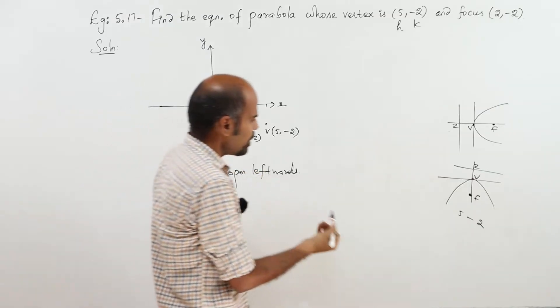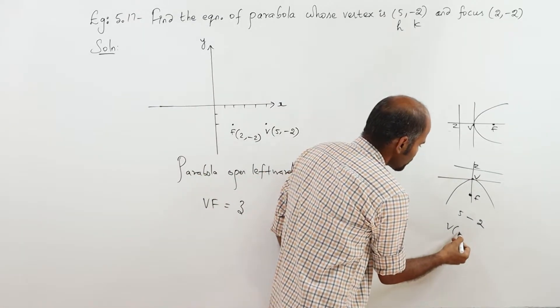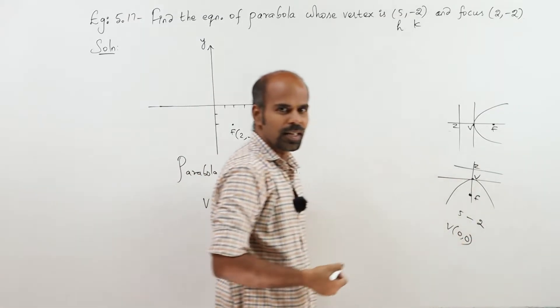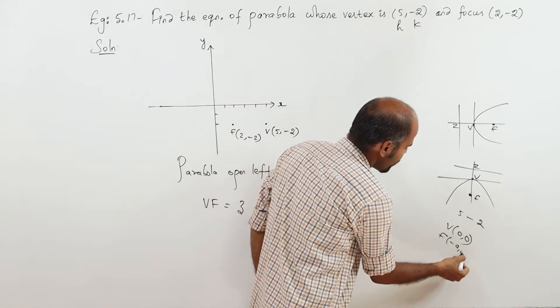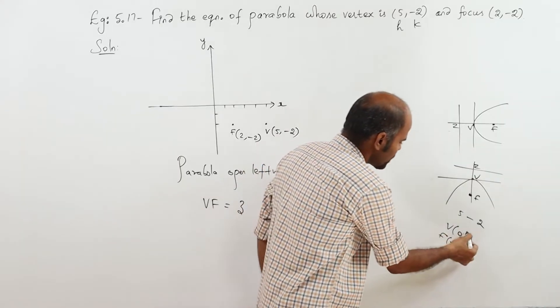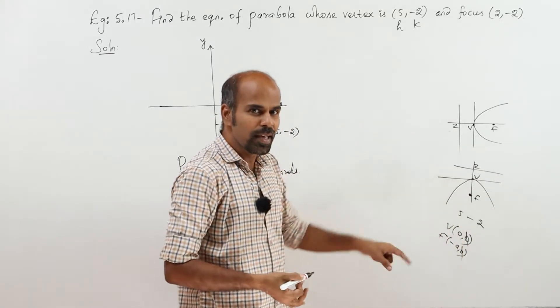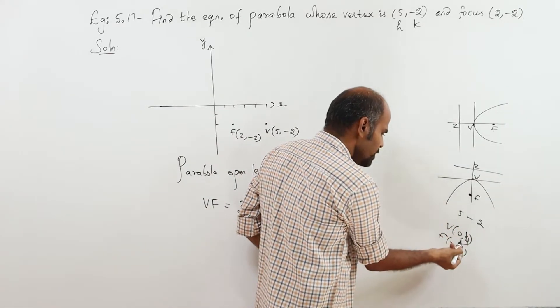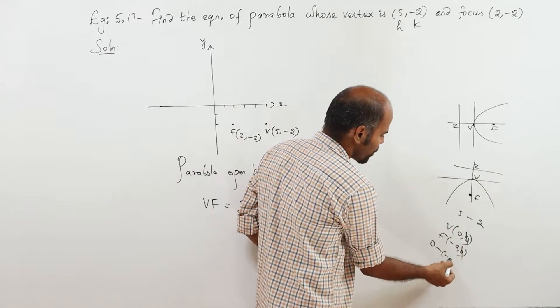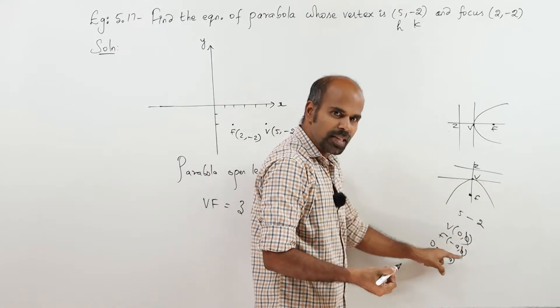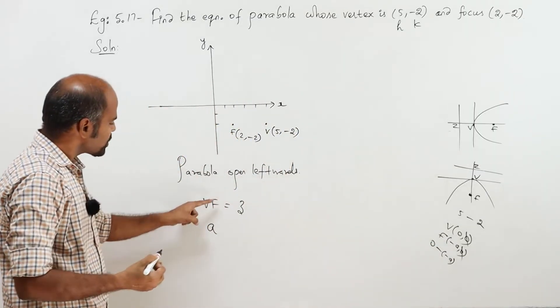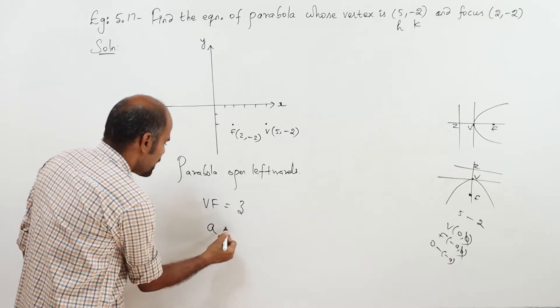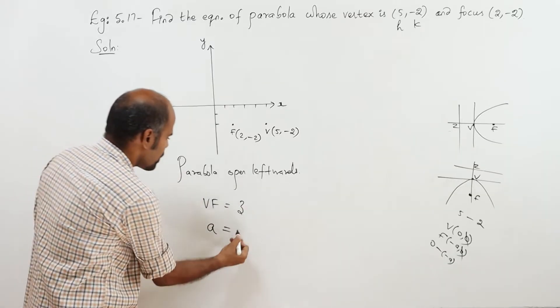Open left words yeddukla. Vertex yeddu 0, 0. Focus yeddu open left words, minus a, 0. Distance, y kawanehutra and the same. Biggest minus smallest. 0 minus a, 0 is the biggest. Biggest minus smallest minus a. 0 plus a. That is a. A equal to 3.